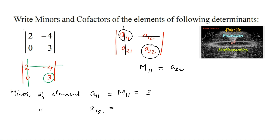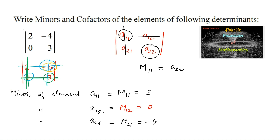Similarly, the minor of element a12 (first row, second column), which is -4: deleting its row and column, we are left with only one element that is 0. So M12 is equal to 0. For element a21, deleting its second row and first column, we are left with -4, so M21 is equal to -4. For the last element a22, deleting its row and column, we are left with only 2, so M22 is equal to 2.